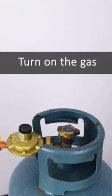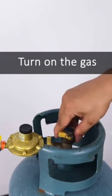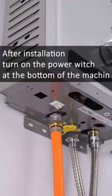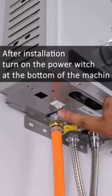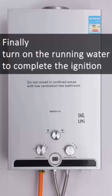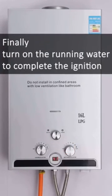Turn on the gas. After installation, turn on the power switch at the bottom of the machine. Finally, turn on the running water to complete the ignition.